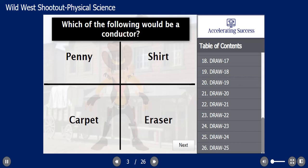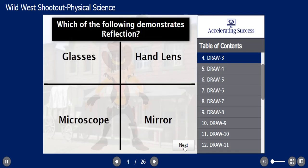Let's pretend we have two new students at the board. The teacher would click next, and you hear the cowboy say draw. That means the two new students flip around, they read the question — which of the following demonstrates reflection — and they would hopefully throw their sticky dart or piece of paper at the mirror. Whoever hits that target first, their team gets the point.